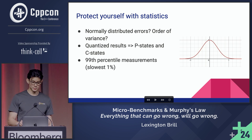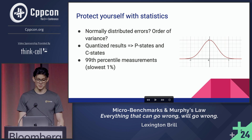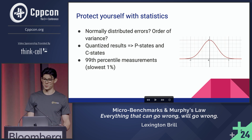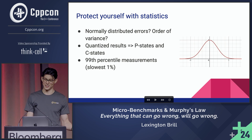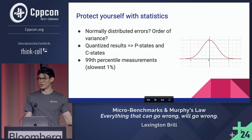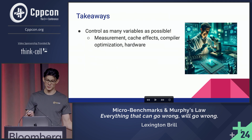Additionally, 99th percentile measurements are just as important as the mean, because they really tell you — when you're having a bad day — how bad that day is going to be for your code.